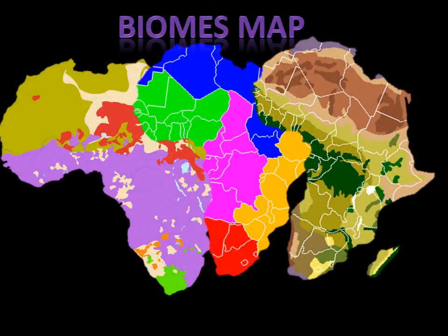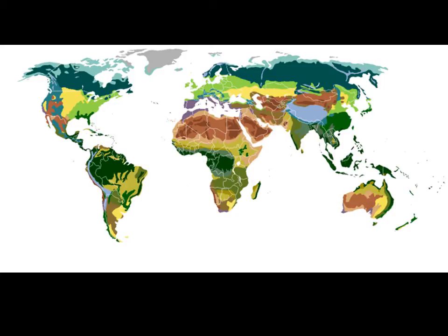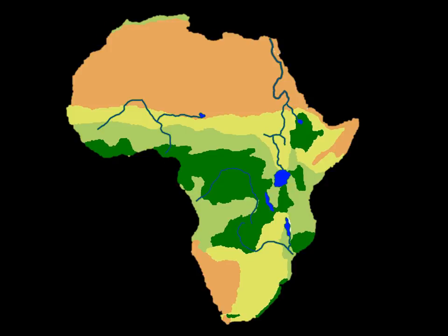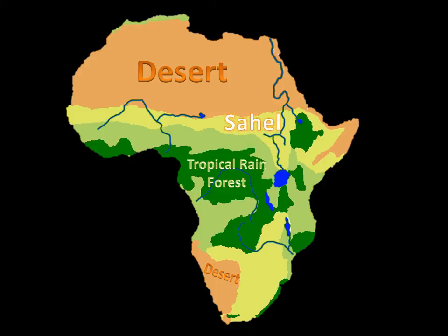Now we have the biomes of Africa. First up, we have the desert. The desert is at least one-third of the land mass of Africa. Next, we have Tropical Rainforest. In the tropical rainforest, they use slash-and-burn agriculture to provide for their needs. Next, we have the Sahel. The Sahel is on the edge of being a desert, but is more like a savanna. Next, we have the savanna. The savanna is dry grasslands, which has a rainy season and a dry season.